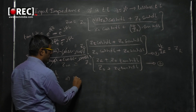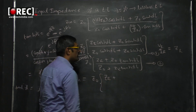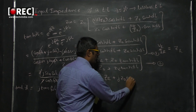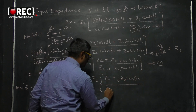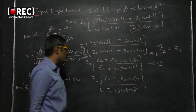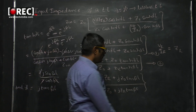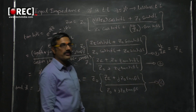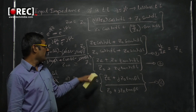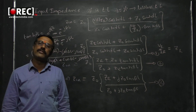Substituting j·tan(βl) for tanh(γl), the input impedance for a lossless transmission line becomes Zin equals Z₀ multiplied by ZR plus j·Z₀·tan(βl), divided by Z₀ plus j·ZR·tan(βl). This is equation number 3. Equations 1 and 2 give the general expressions for a lossy transmission line, and equation 3 is used for determining input impedance of a lossless transmission line.